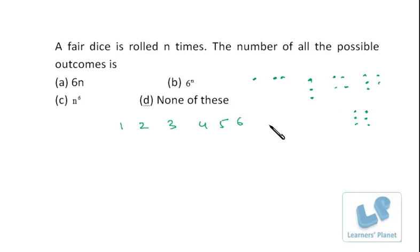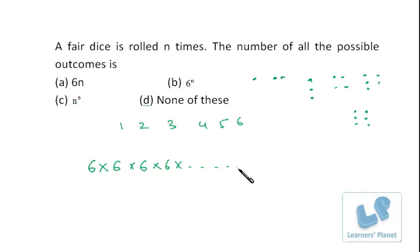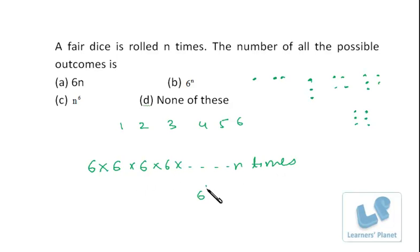For the first roll you have six choices; rolling again gives six more choices, and so on — six choices every time. You roll the dice n times, so the total is 6×6×6... n times, which equals 6 raised to n. The number of all possible outcomes is 6^n.